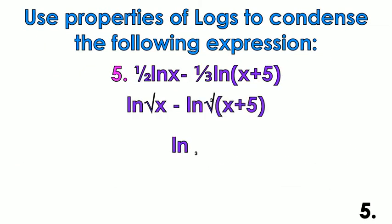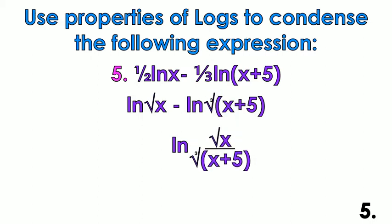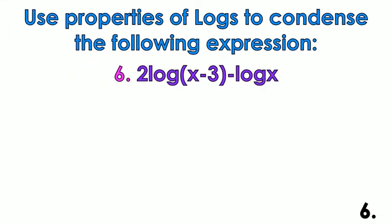The quotient rule makes it so that you have the square root of x on top and the cube root of x plus 5 on the bottom.